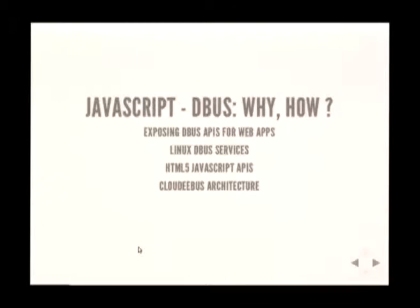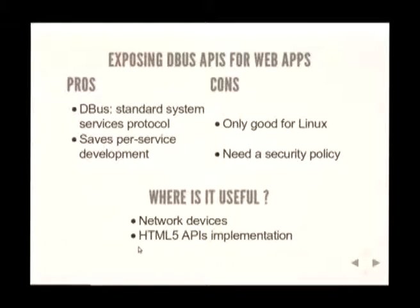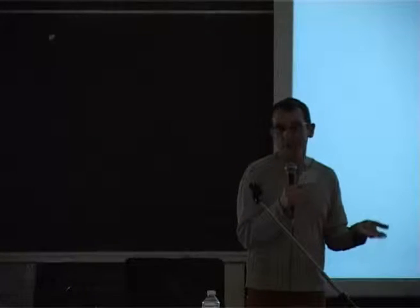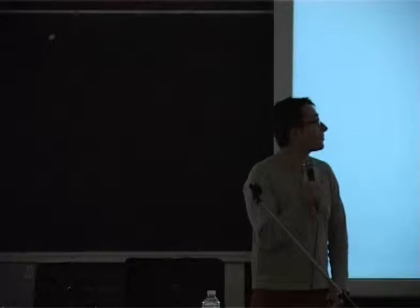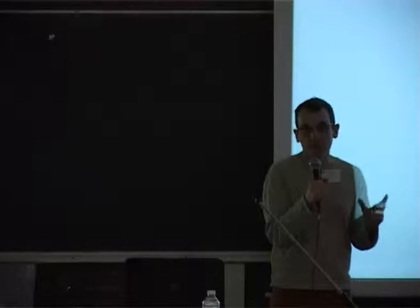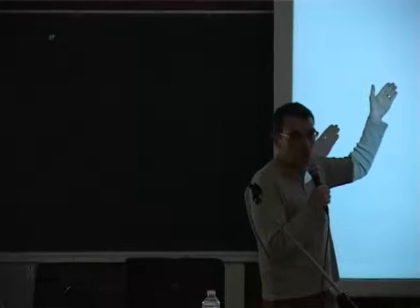Why do this? The main reason is to implement HTML5 APIs on a different platform. The nice thing is that almost every low-level service in Linux has a DBus interface. If you want to expose these interfaces to JavaScript, you'd have to write a native plugin or a C script — that would be one piece of server code per DBus interface — whereas here you only do it once.